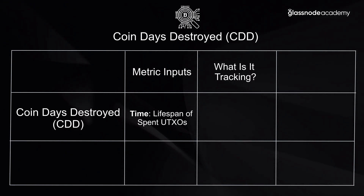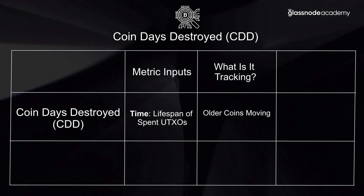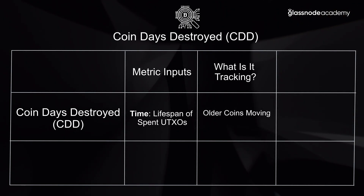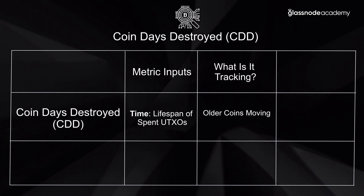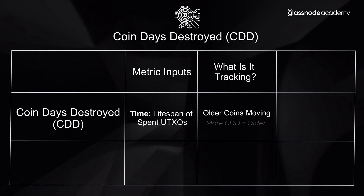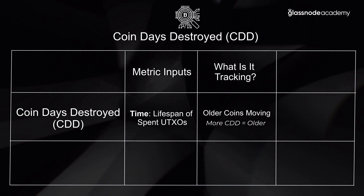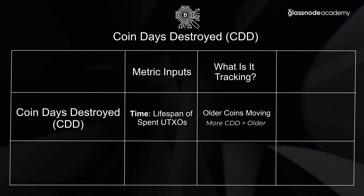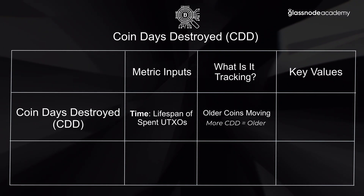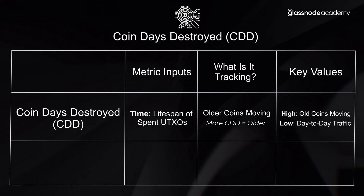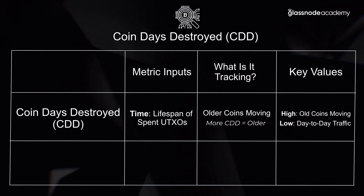What this is tracking in general is when are we seeing older coins coming back to life? When are older dormant coins that were perhaps purchased in the last market cycle coming back onto the market and becoming reactivated? A higher Coin Days Destroyed level will essentially say that more of those either higher volume or older coins, or a combination of both, are currently on the move. A high value means old coins are moving, and low values tend to be day-to-day traffic.